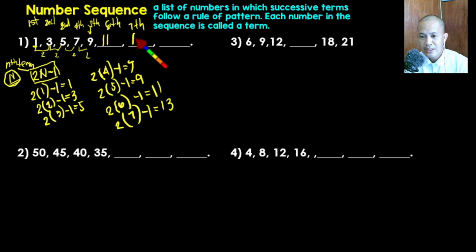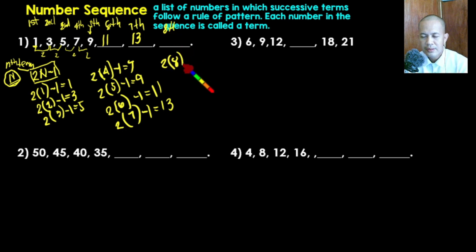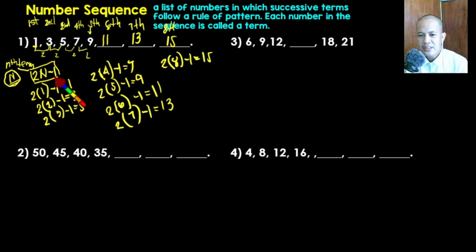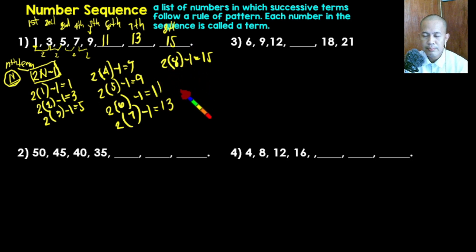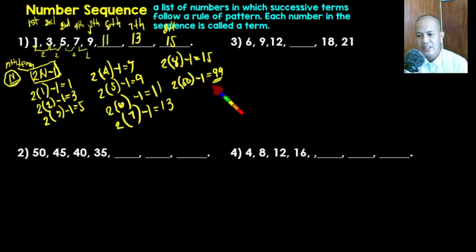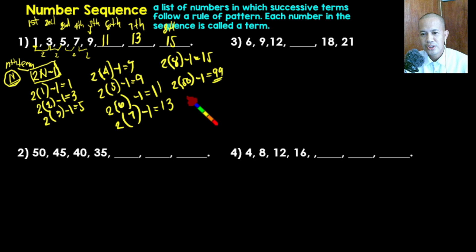For the eighth term: two times eight is sixteen, minus one gives fifteen. So the missing eighth term is fifteen. That is the benefit of having a formula. For example, looking for the 50th term: two times fifty is one hundred, minus one gives ninety-nine. So the 50th term is ninety-nine. That is the use of finding the number sequence by making and applying a formula.